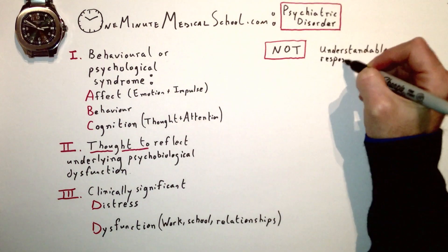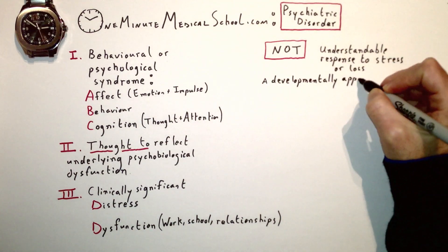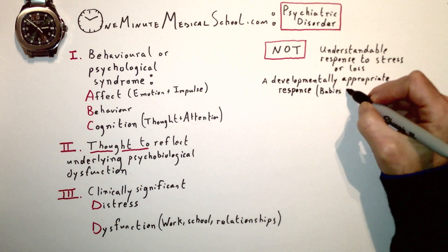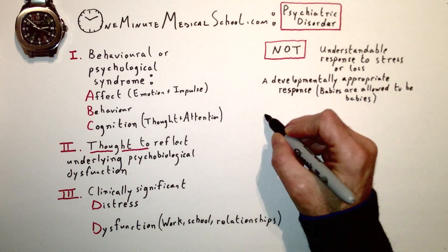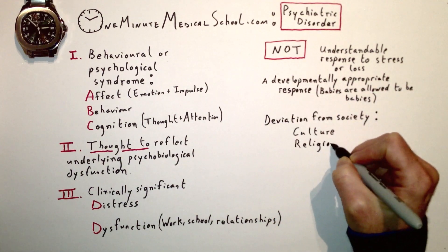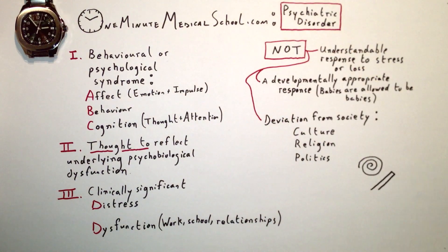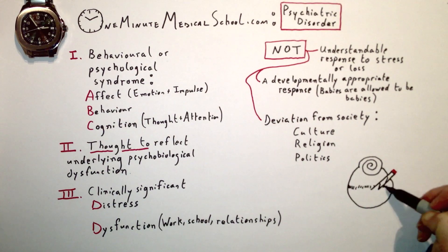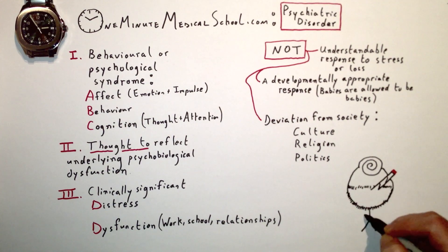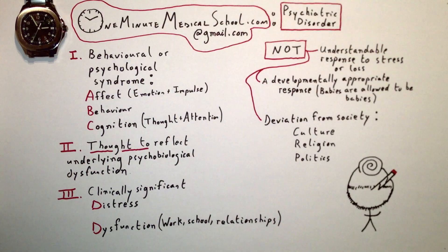Important exceptions: it cannot just be an understandable response to stress or loss, such as grief after a death. It can't be a developmentally appropriate response either. Finally, and most importantly, it can't just be a deviation from society — meaning culture, religion, and politics don't cut it. You might not like how somebody dresses or thinks or who they love, but that's not a psychological problem.